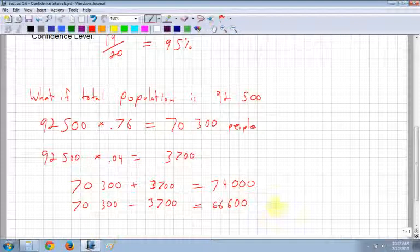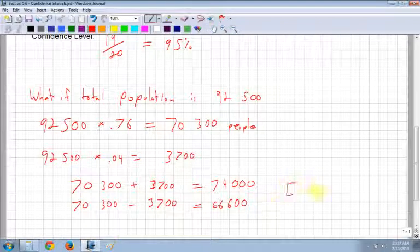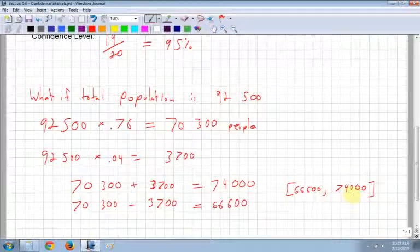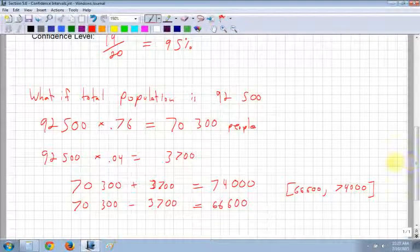Okay? So anywhere within that range. So we could say, again, we could write it in set notation here. We could have from 66,600 all the way up to 74,000. And again, we use square brackets to include those values. So there's the whole question kind of done for you.